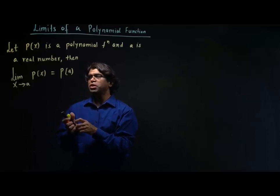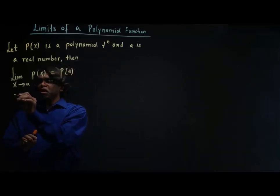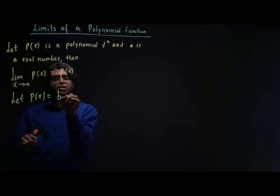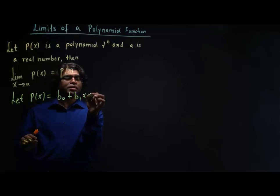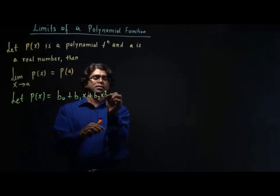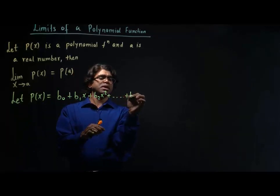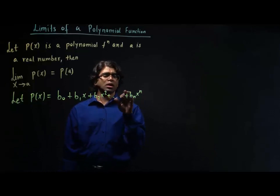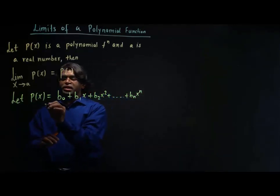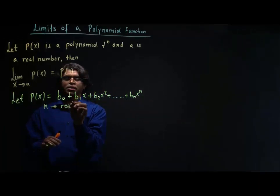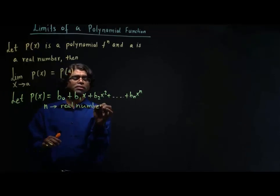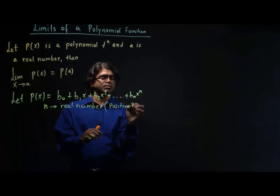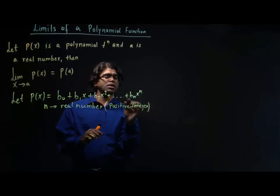I'm going to consider a polynomial function. Let p(x) be a polynomial function such as b0 plus b1x plus b2x squared plus dash dash dash plus bn x to the power n. So, p(x) is a polynomial function of order n, where n is a positive integer.